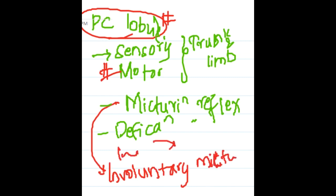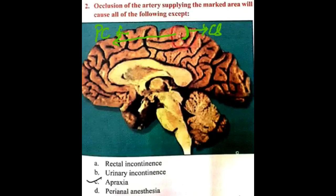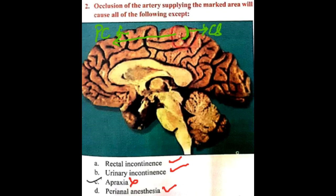So in a paracentral lobule lesion: rectal incontinence will occur, urinary incontinence will occur, and perianal anesthesia will also occur because there is sensory loss in the trunk and limb below the knee. However, apraxia will NOT occur — so apraxia is the answer to 'all of the following except.'